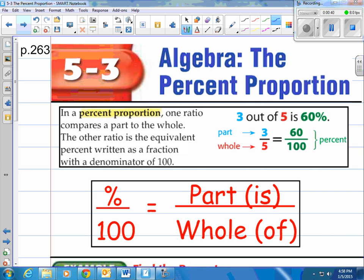they show you 3 out of 5 is 60%. That is a true statement, and then they show you that if you take and put the part over the whole, 3 over 5, that will equate to 60 over 100, which is percent. Remember, percent means out of 100.